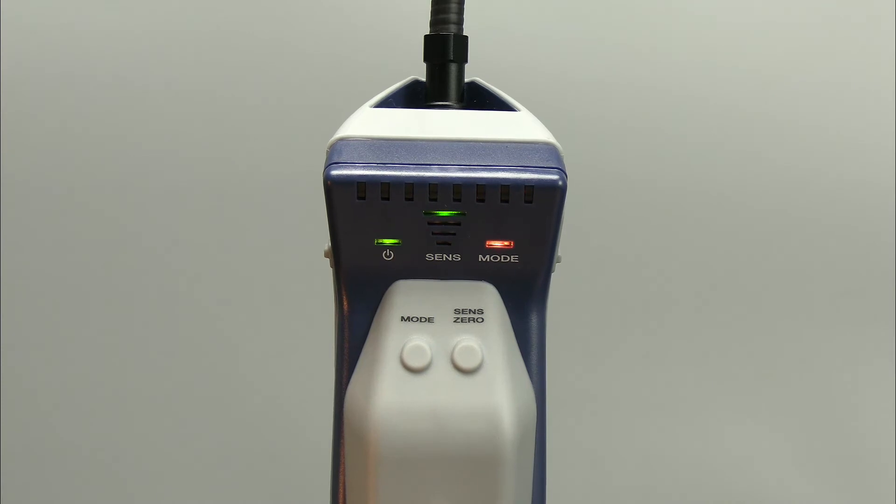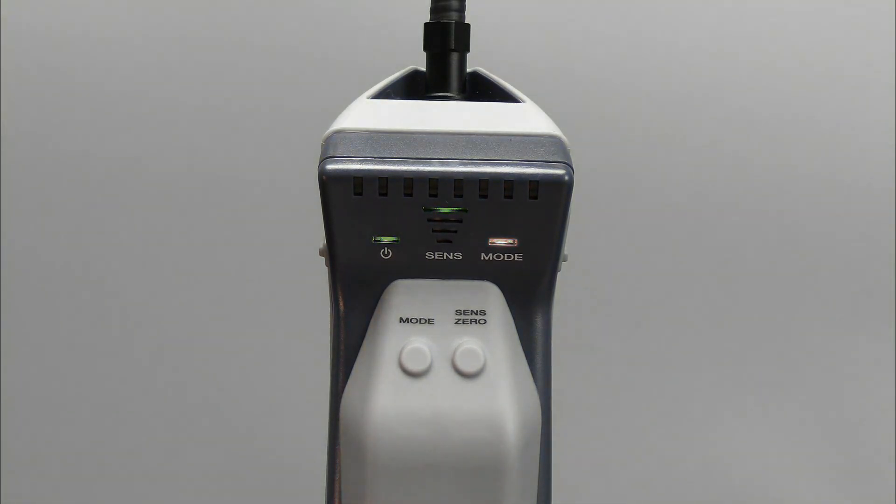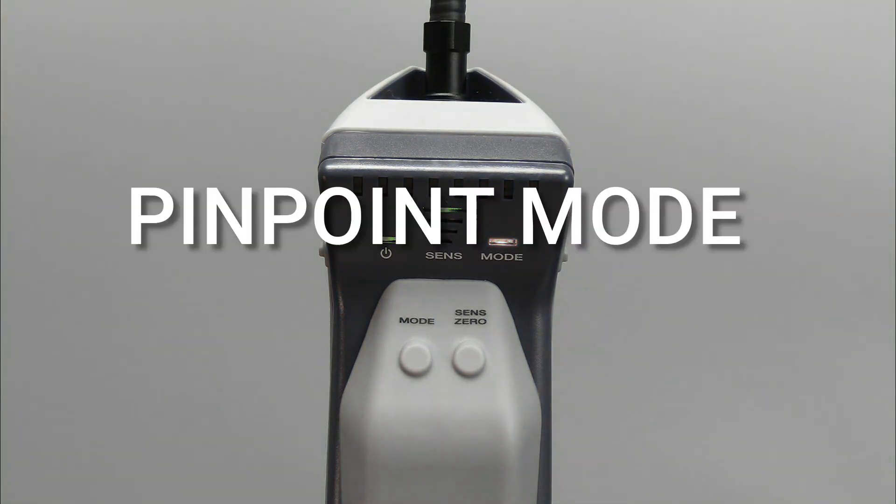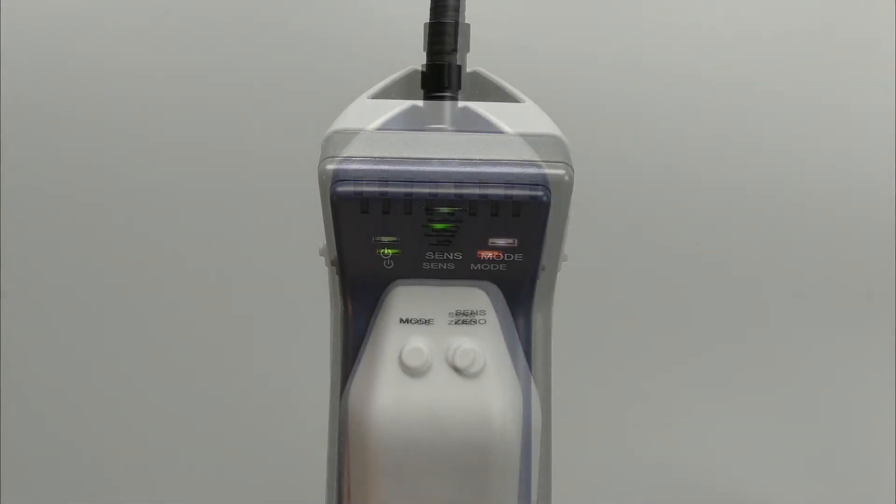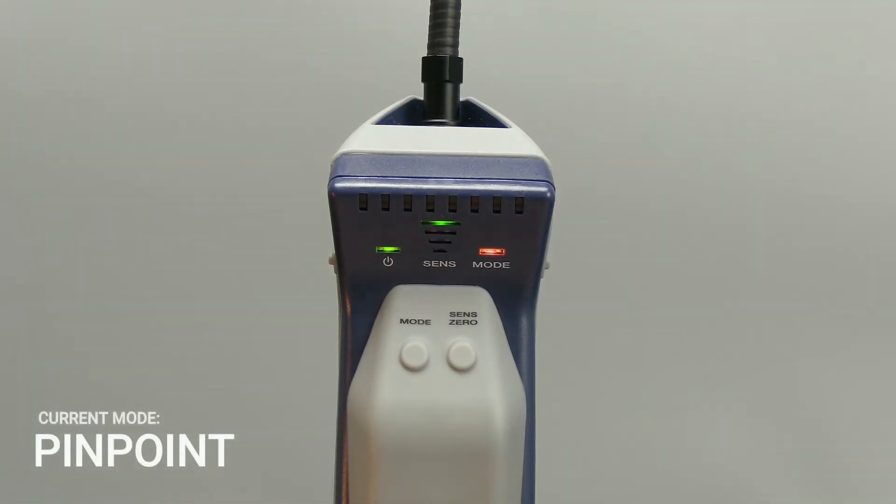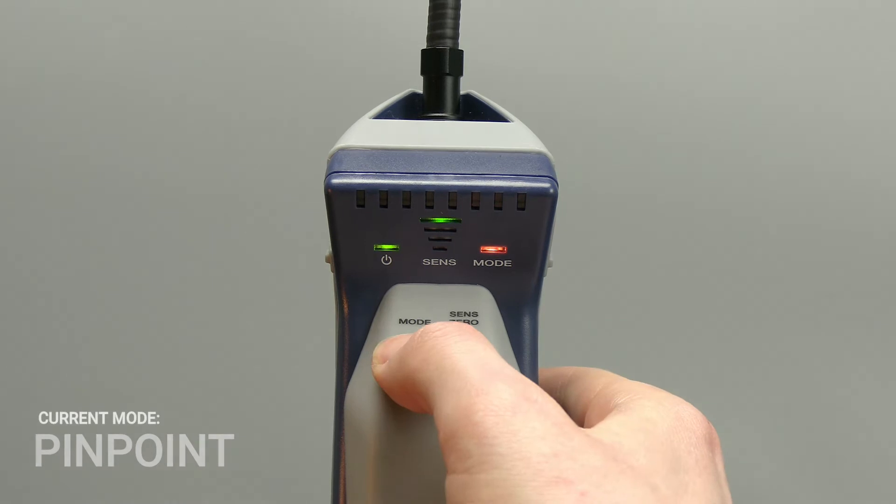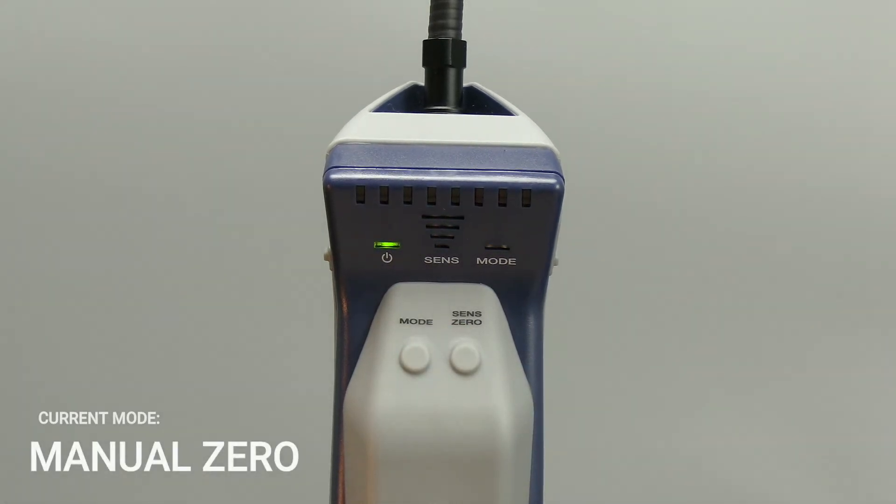AST 200 IR has two different modes to help you find leaks: pinpoint mode and manual zero mode. Press the mode button to switch between the two modes. AST 200 IR always starts up in the last mode that was used.